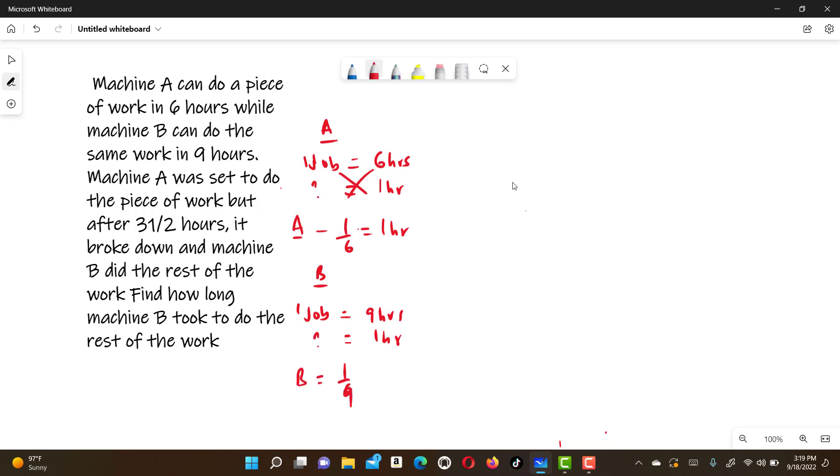So machine A started the work and it was working for three and a half hours. Three and a half hours is the same as seven over two hours. If one hour machine A can do one over six of the job, what fraction of the job can machine A do in seven over two hours?